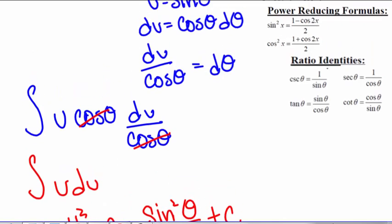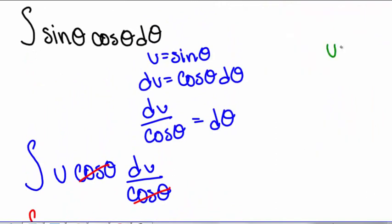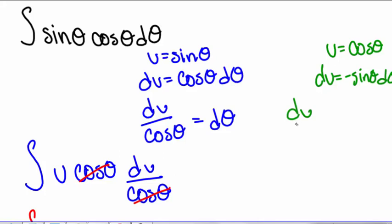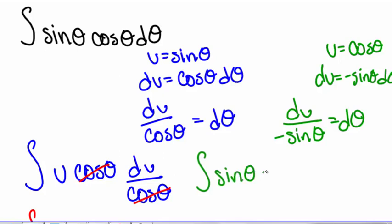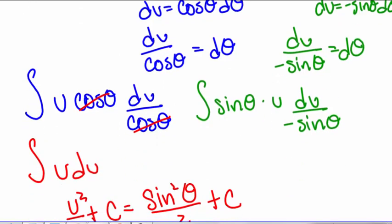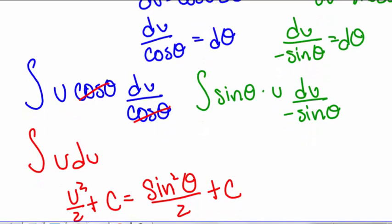Now the other way we could have solved this was if we had let u equal cosine of theta. Then du equals negative sine of theta d theta, so du over negative sine of theta equals d theta. So we have the integral of sine of theta times u times du over negative sine of theta. Our sine of thetas cancel out, but we can't forget about this negative.